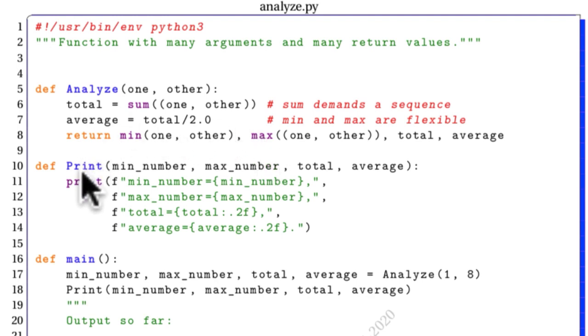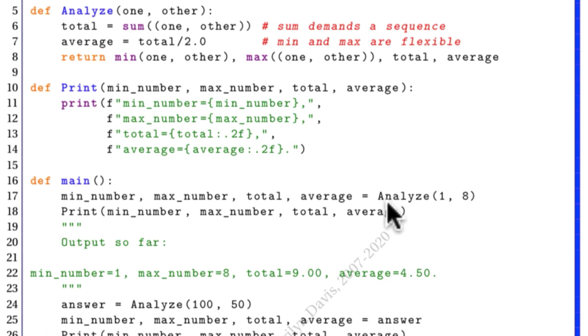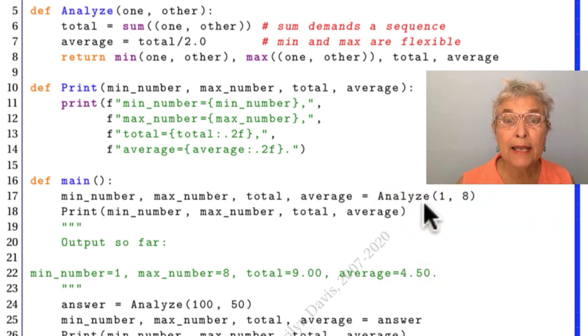We also have a print function with a capital P meaning that it's my function. I've written it. It takes in four numbers and it gives a report of them. Let's look at our main. On line 17, we're calling analyze with one and eight as our arguments. We get back that minimum number, the max, the total, and the average. Four different values come back. And those four different values get assigned into the four different identifiers. That's one way to do it. And then I do that print so we can see it. And we see it worked perfectly.